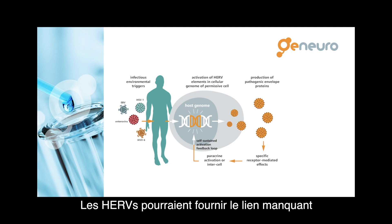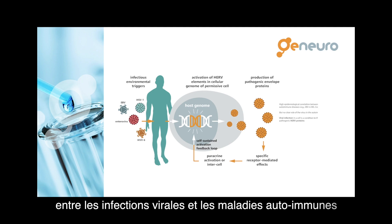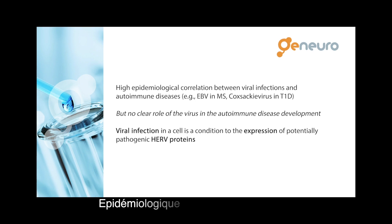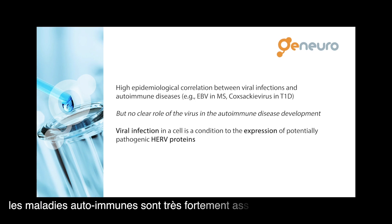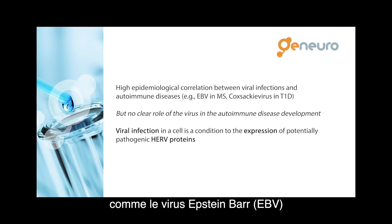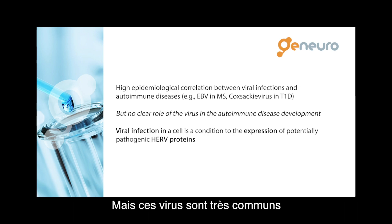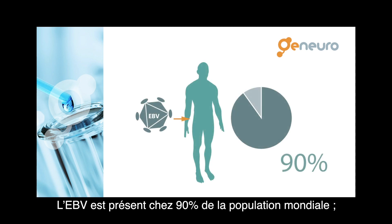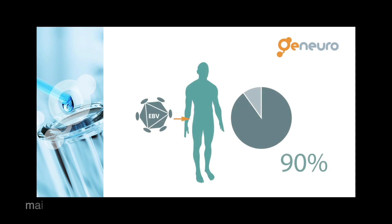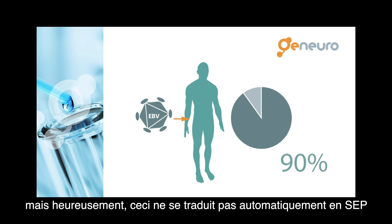HERVs may provide the missing link between viral infections and autoimmune diseases. We know epidemiologically that autoimmune diseases are very closely associated with viral infections, like Epstein-Barr virus (EBV) in all multiple sclerosis patients, or Coxsackie virus in type 1 diabetes. But these are very common viruses — EBV infects 90% of the world population, yet 90% of the world population does not develop MS.